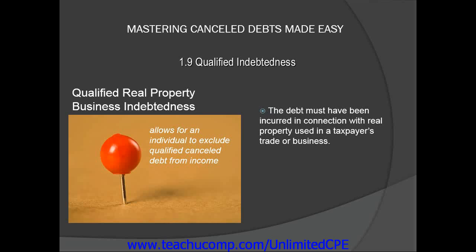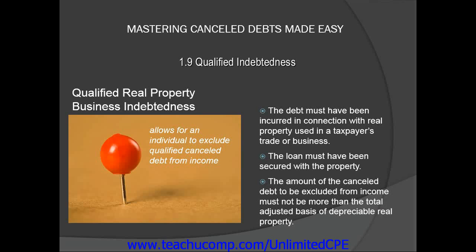First, the debt must have been incurred in connection with real property used in the taxpayer's trade or business. Second, the loan must have been secured with the property. Third, the amount of the canceled debt to be excluded from income must not be more than the total adjusted basis of depreciable real property.